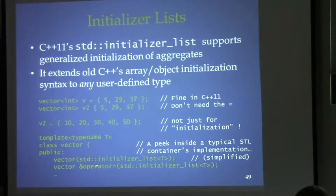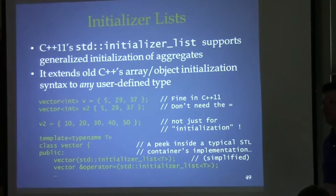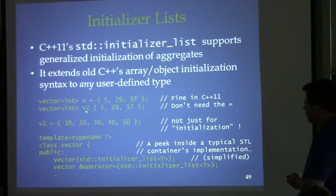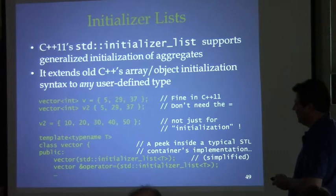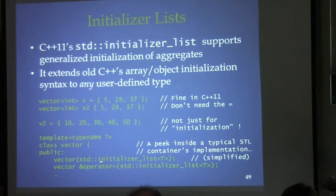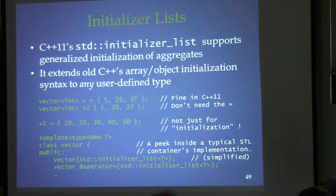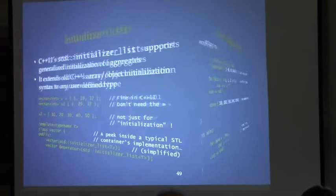A function `foo` returning a `vector<int>` can return using an initializer list directly in the return statement. A range-for loop can call `foo` and iterate over the returned vector. The initializer list can also be used with `insert` — there's an overload that takes an initializer list rather than a begin/end pair. A range-for can also operate directly over an initializer list. An initializer list requires all values to be of consistent type — mixing types like `30U` with plain `int` would be a compiler error, since the type must be uniform.